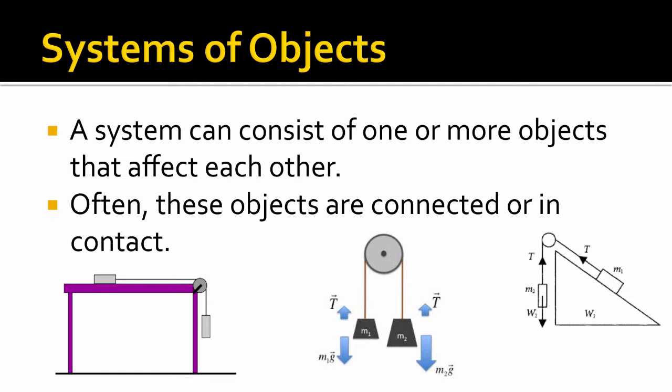A system of objects is more than one object that are connected or somehow in contact. They have to be affecting each other. We're not just going to have a couple of random objects not affecting each other. They're not going to interact with the calculations at all.